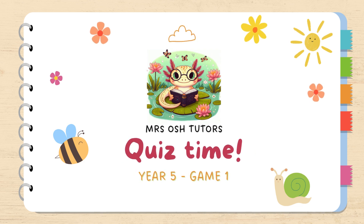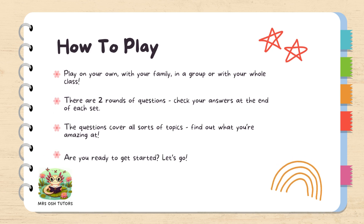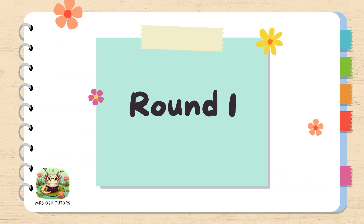Okay Year 5s, let's do a quiz and see what you know. This quiz you can do on your own, with your family, in a group, or let your teacher know and you can play as a whole class. There are two rounds of questions; each round has eight questions and all the answers are fully explained at the end. This quiz covers English and Maths but also all kinds of other things from nature, science and art. So let's get started — grab a piece of paper and a pen and we're on to round one.